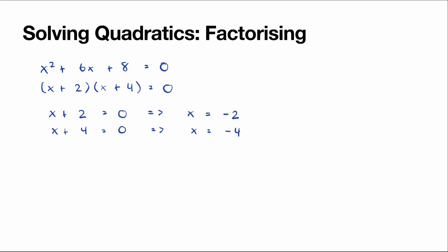We can check this by substituting x equals negative 2 into x squared plus 6x plus 8. We get: negative 2 squared plus 6 times negative 2 plus 8. Negative 2 squared is 4, 6 times negative 2 is negative 12, plus 8. So 4 minus 12 plus 8 equals 0, which confirms our answer is correct.